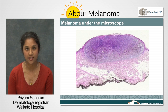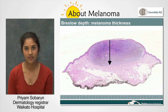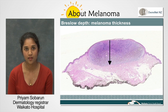Once the pathologist has made a diagnosis of a melanoma, he or she will look for some key features that will determine how good or bad the melanoma is. These are the thickness of the melanoma or the Breslow depth, the presence of ulceration or loss of epidermis, and the presence of mitosis or rapidly dividing cells.